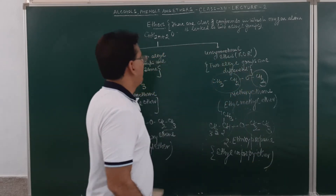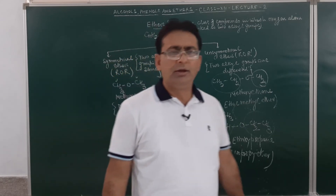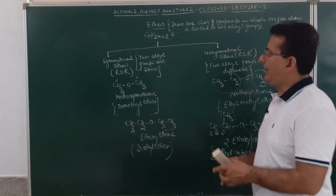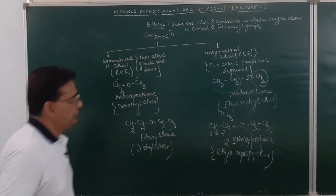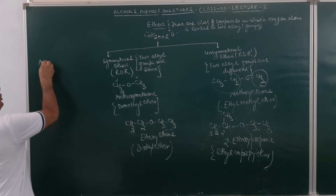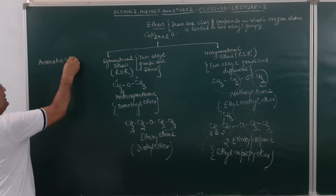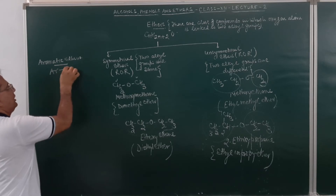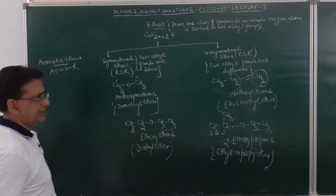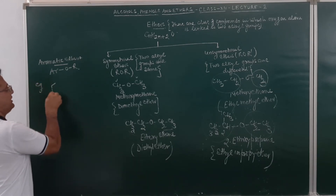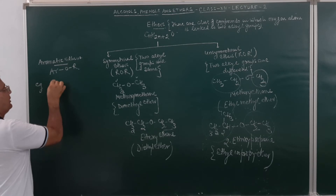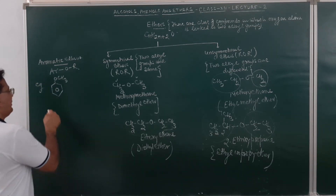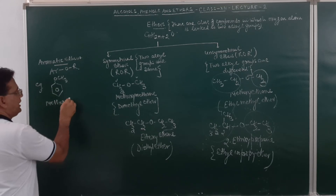Symmetrical and unsymmetrical ethers must be very clear to you students. Apart from those, we also have in our syllabus the aromatic ethers. In aromatic ethers, we have an aromatic group — normally benzene — linked to oxygen and then an R group. For example, if you consider the benzene ring with O-CH3, the name of this compound is methoxybenzene.